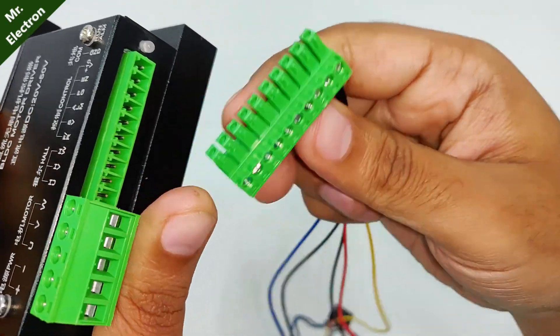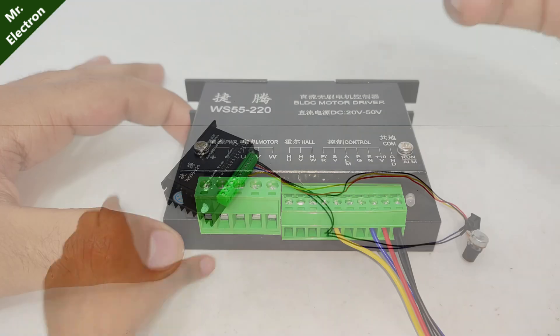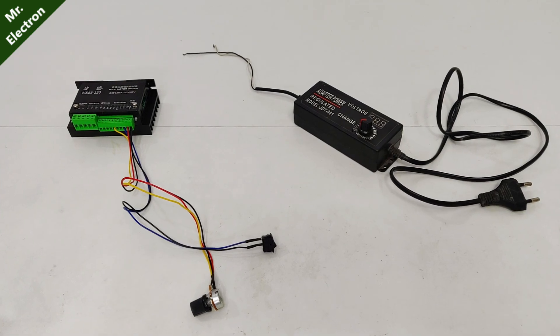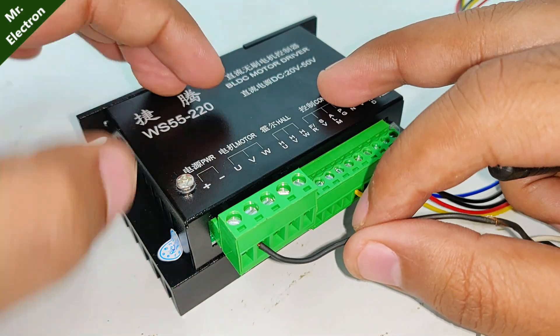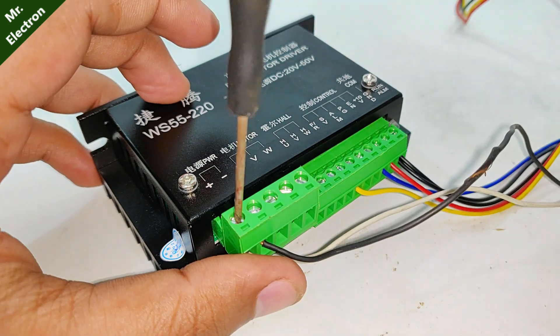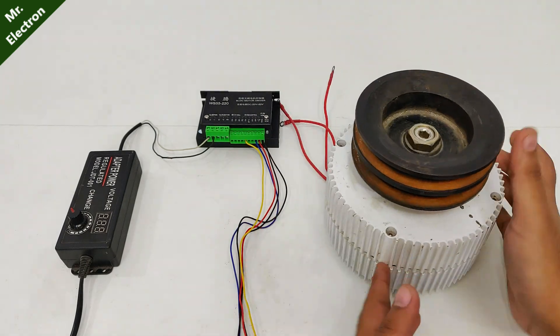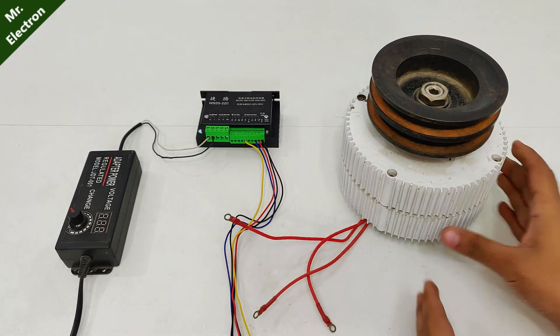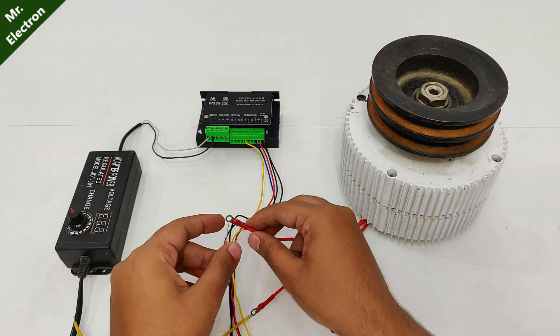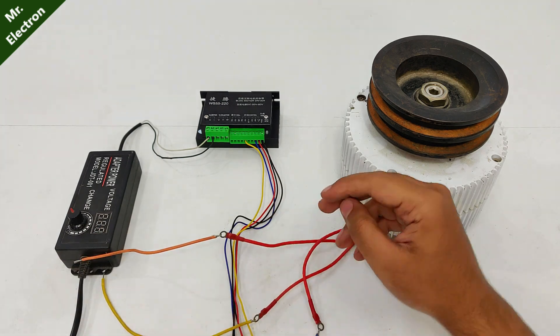Next comes the DC input. You see positive and negative from my variable 24 volts power supply. Now the power supply has been connected to the controller and it is going to feed in 24 volts maximum to my controller. Also for testing I'm going to use this 24 volts 400 watts wind turbine generator as the BLDC motor here.